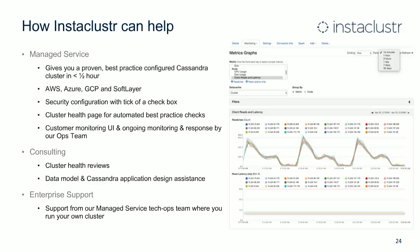Just a quick slide on what Instacluster does. We have three arms to our business. Our core service is our managed service — you can go to our console and spin up a Cassandra cluster in less than half an hour. You pick the cloud provider, the version of Cassandra, how many DCs and nodes, tick the security configuration you want, and press go. Our provisioning system automatically spins that all up for you and we manage it from there. There's access to a monitoring UI, all nodes are monitored on an ongoing basis, and it's our ops team that manages and responds to that.